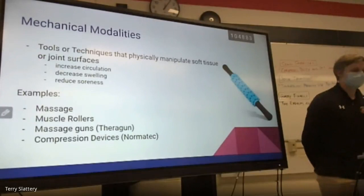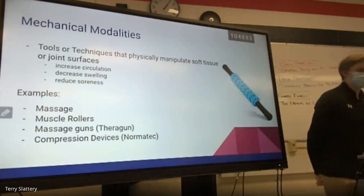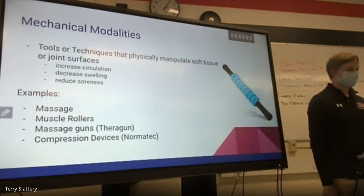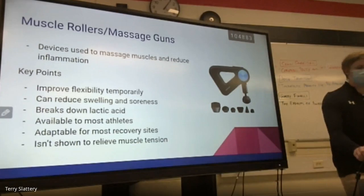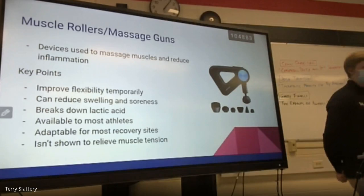Mechanical modalities are the third type. These are tools or techniques that physically manipulate soft tissue or joint surfaces. They increase circulation or decrease swelling depending on which ones you use, and they reduce soreness. Examples include massage, muscle rollers, massage guns, and compression devices such as NormaTec. Muscle rollers and massage guns are great for improving flexibility temporarily, reducing swelling and soreness, and breaking down lactic acid — available to anyone.